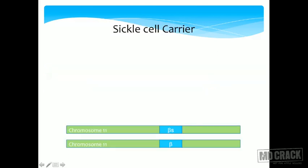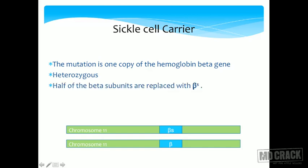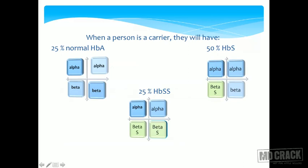In a sickle cell carrier, the mutation is in only one copy of the hemoglobin beta chain — this is the heterozygous state. Half of the beta subunits are the sickle beta S form; this person has the sickle cell trait. Such a carrier will have 25% normal HbA (2 alpha, 2 beta), 50% HbAS (2 alpha, 1 beta S, 1 normal beta), and 25% HbSS (2 alpha, 2 beta S).